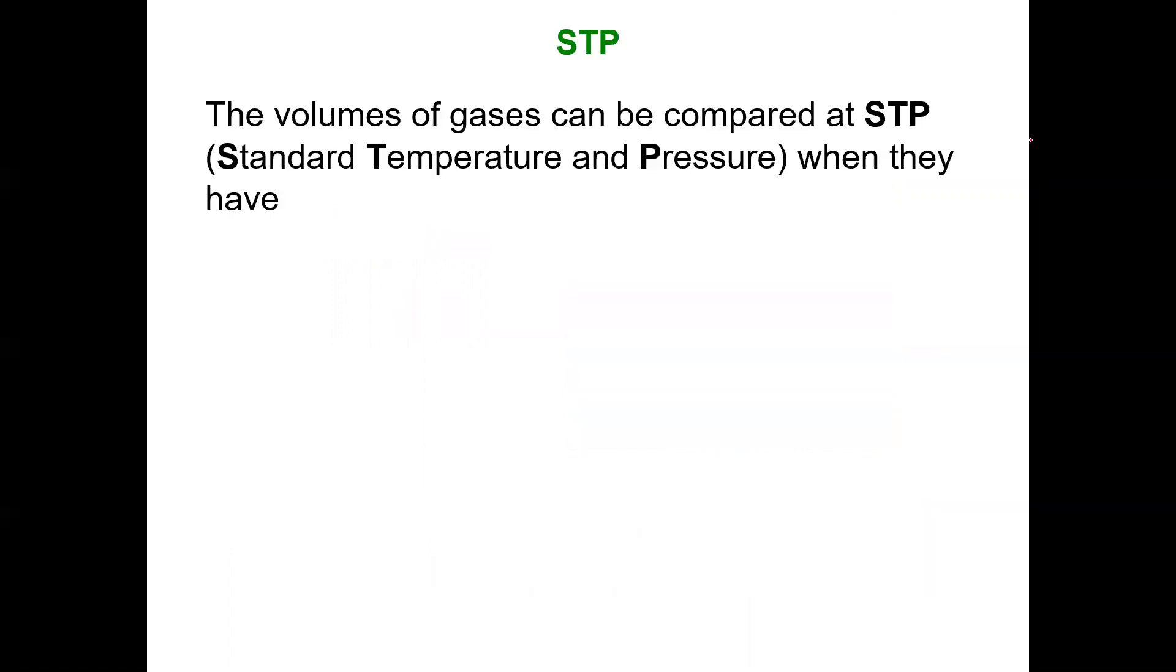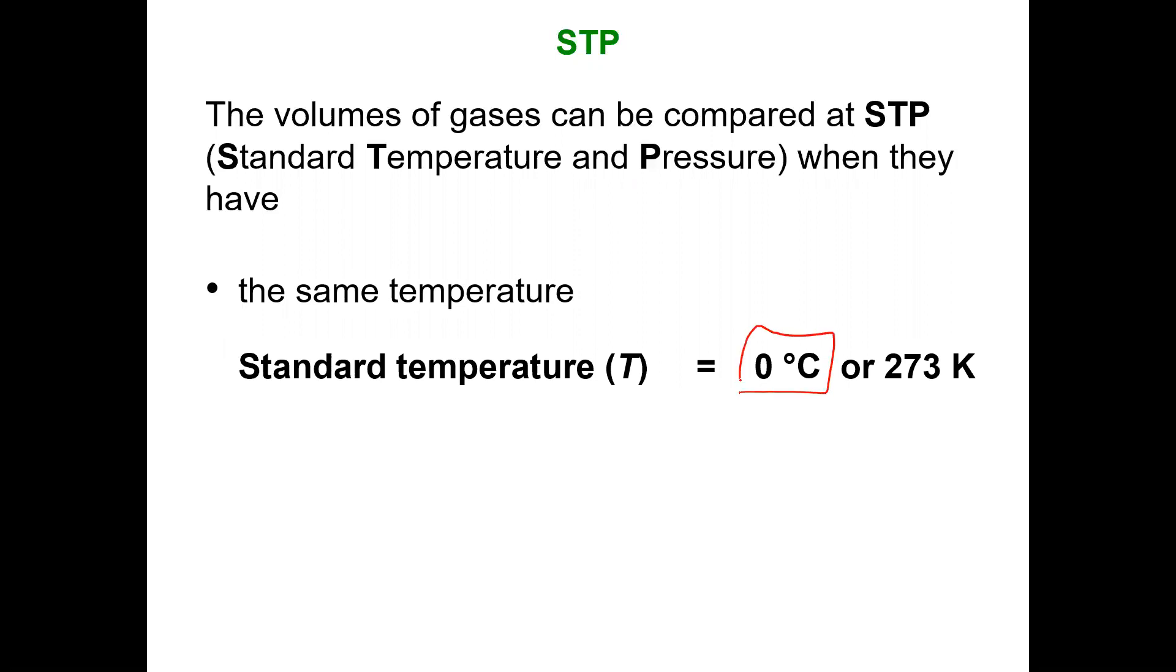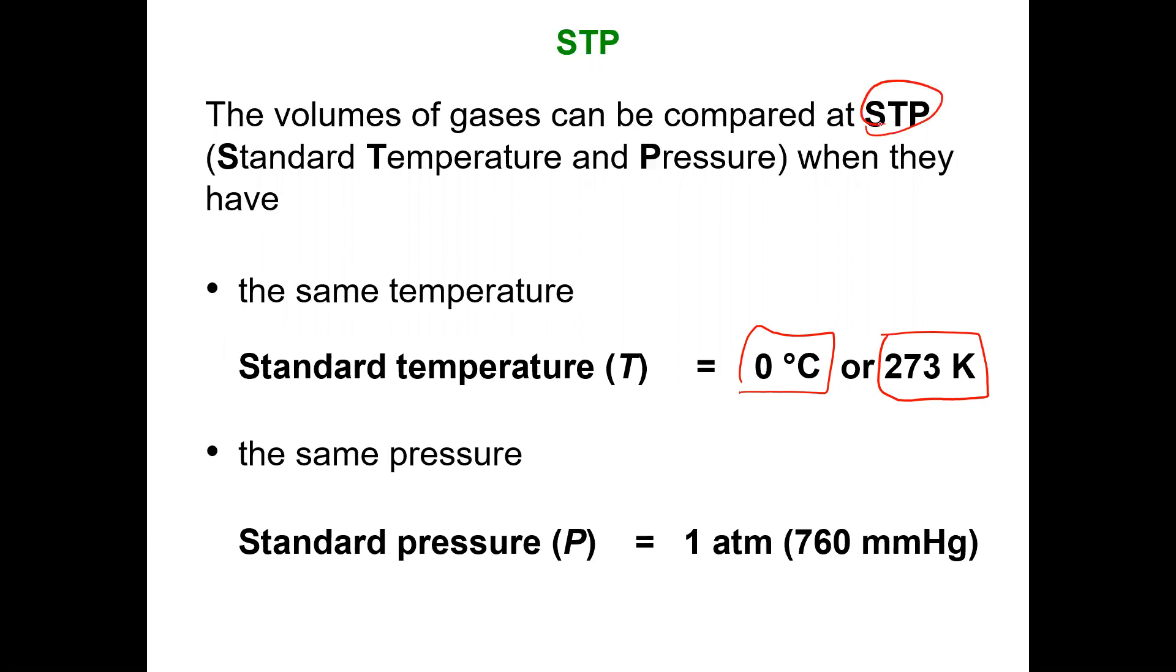So the volume of gases can be compared at STP, which stands for standard temperature and pressure. We make a set of conditions. Standard temperature is going to be zero degrees Celsius. I like to tell students we always use Kelvin, so your focus should be 273 Kelvin. Your pressure is one atmosphere. So at STP, our standard temperature and pressure, we're looking at 273 Kelvin and one ATM.